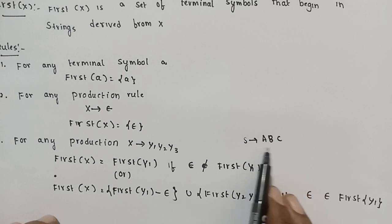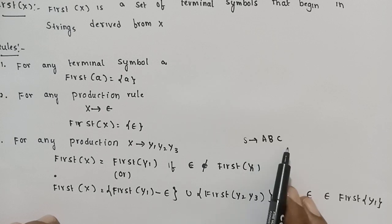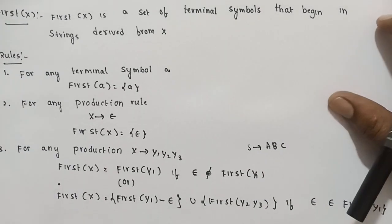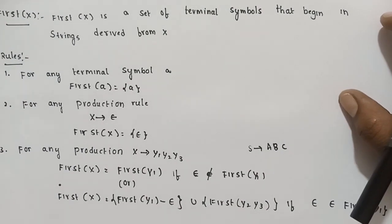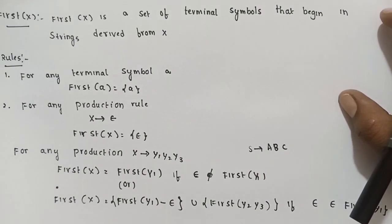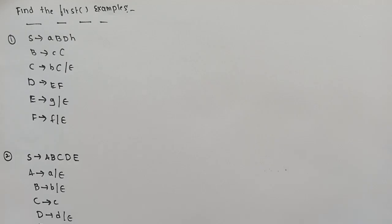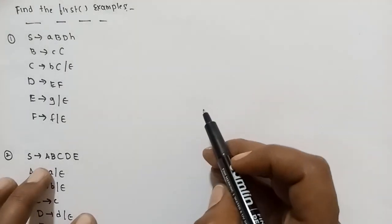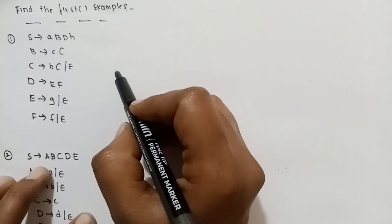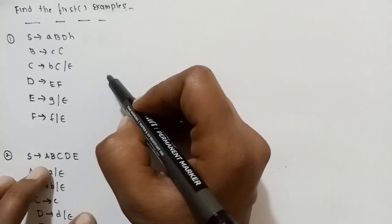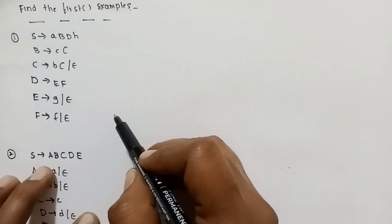If we use an example, we will calculate First of C. Let's see an example. We call this First Calculate C — each code is First Calculate C.